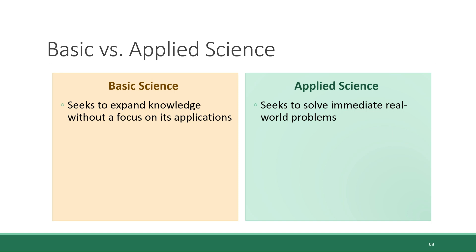The final topic we will be covering in this chapter is the distinction between basic and applied science, and how scientific findings are officially communicated. We talked about how some science is descriptive and some science is hypothesis-based. Another way that we can slice the science pie into two different camps is basic science versus applied science, both of which are relevant to the broader study of environmental science. The goal of basic science is to expand knowledge without a strict focus on how that knowledge might be used in applications that solve problems.